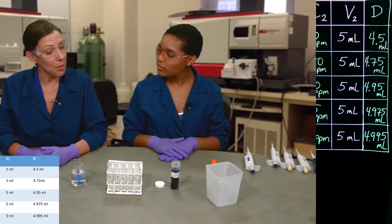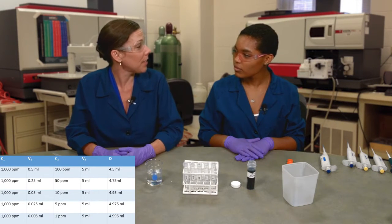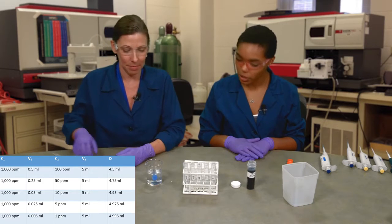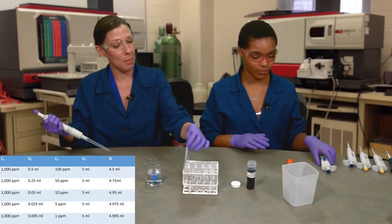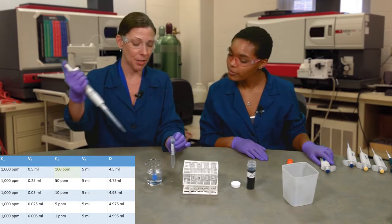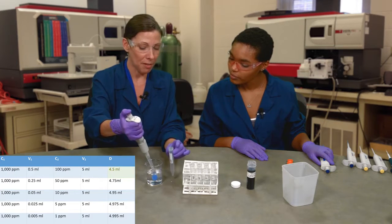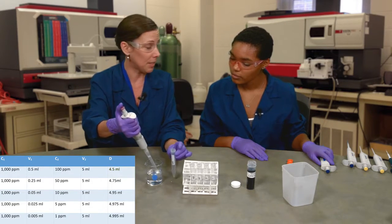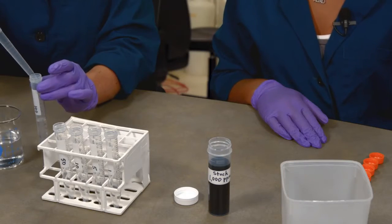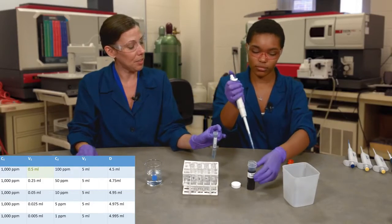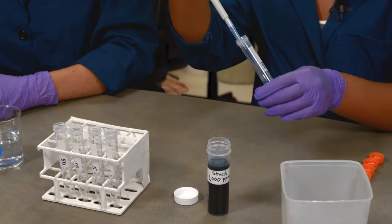Now that we know the volumes of diluent and stock solution required for each standard, let's make the dilutions. So to make the 100 ppm standard, we'll use 4.5 milliliters of diluent, in this case water, and add 0.5 milliliters of 1000 ppm stock solution.